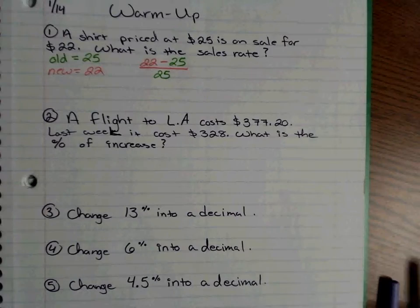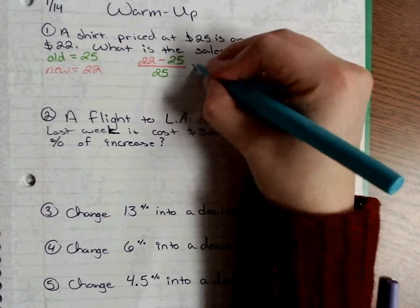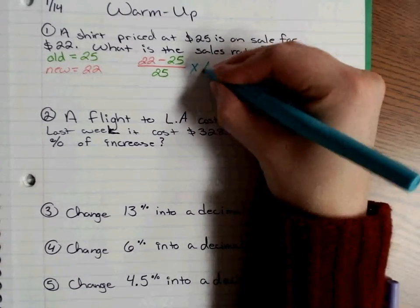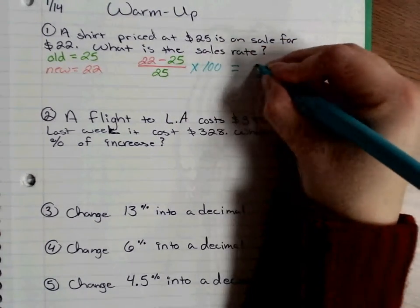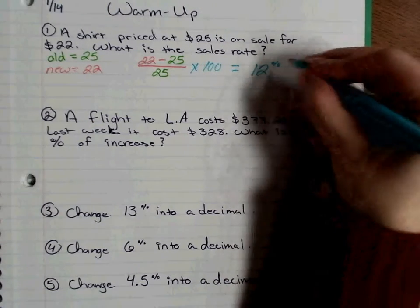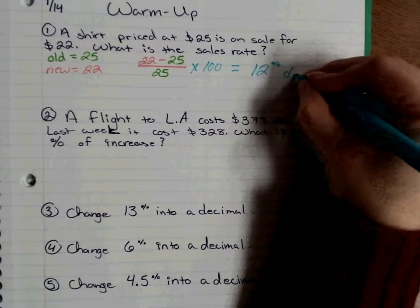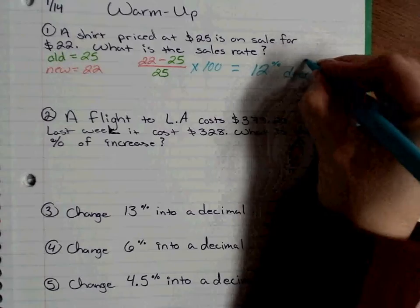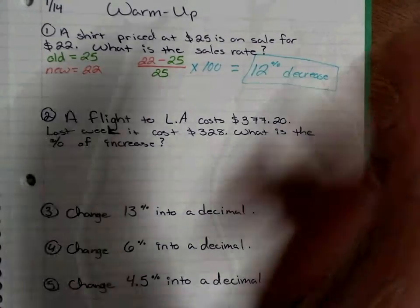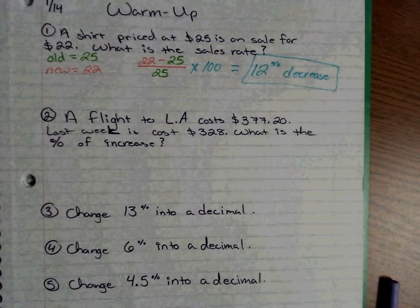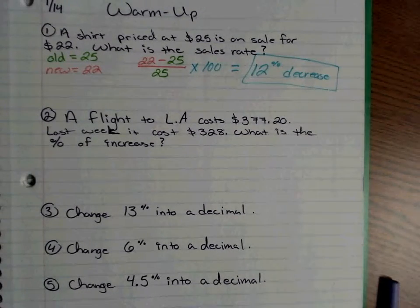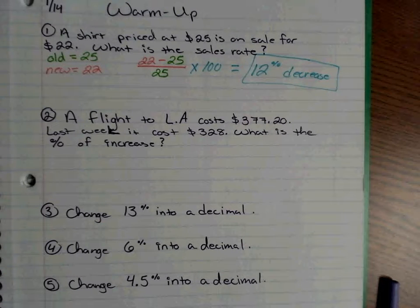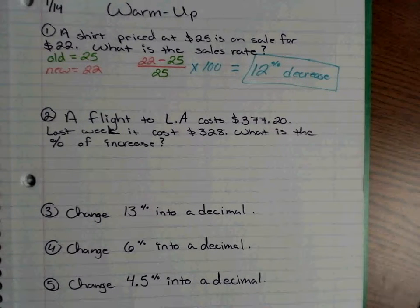Dividing gives you negative 0.12, and then you multiply by 100, which gives you negative 12, or 12% decrease. Remember: if it's negative that means it's a decrease; if it's positive it means it was an increase. Don't forget you have to do the subtraction first before you can divide and multiply.